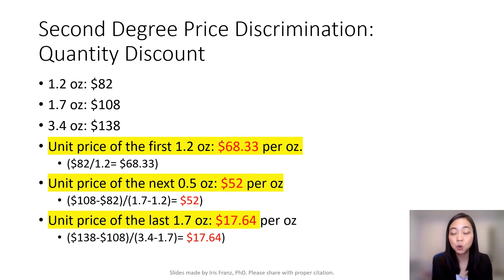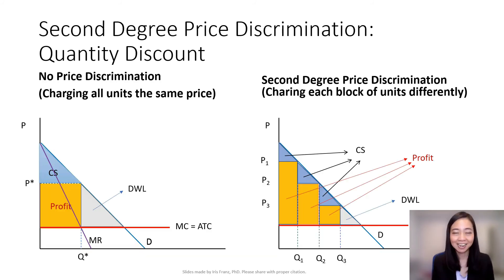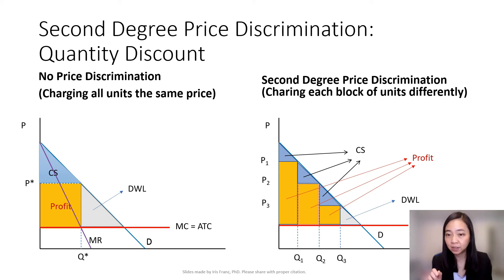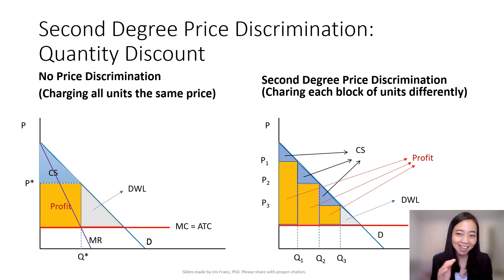Therefore, the unit price is going down when you're buying more. We can graphically compare no price discrimination and second-degree price discrimination. If you're buying Q1, your unit price is P1. If you're buying between Q1 and Q2, your unit price is P2. If you're buying even more between Q2 and Q3, your unit price is P3. That's exactly the situation of our Chanel fragrance pricing.